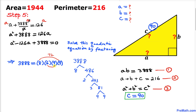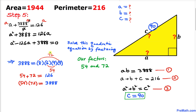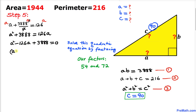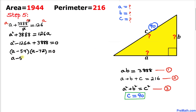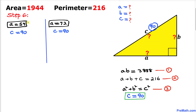We can see that 8 times 9 is 72 and 6 times 9 is 54, so our factors are 72 and 54. If we add these two numbers we get 126, which matches our coefficient, and if we multiply them we get 3888. So the factored form is (a minus 54)(a minus 72) equals 0, giving a equals 54 or a equals 72.